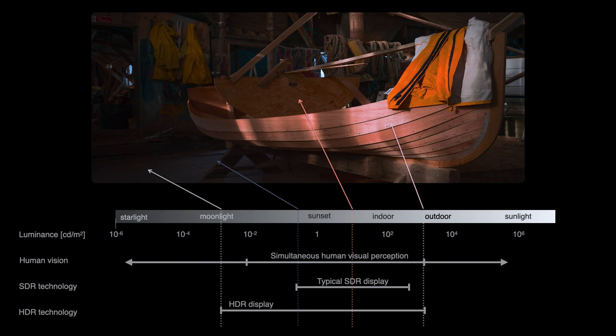In photographic systems, our base aim is to capture and reproduce this world as perceived by the photographer. Until recently, photographic reproduction has been limited to SDR, or standard dynamic range, which is less than we can see.